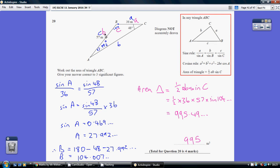So it's half times A, 36, times B, which is 57, times sin 104.007, gives me 995.49 dot dot dot, which is 995 to 3 significant figures.